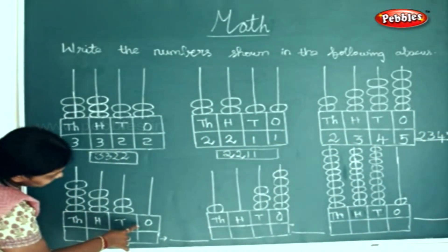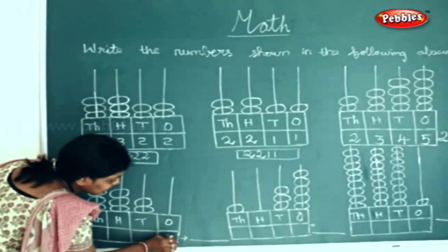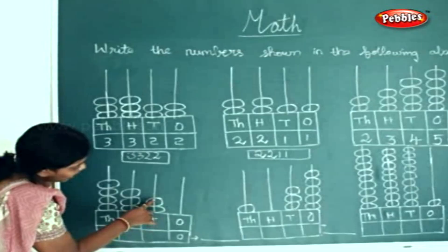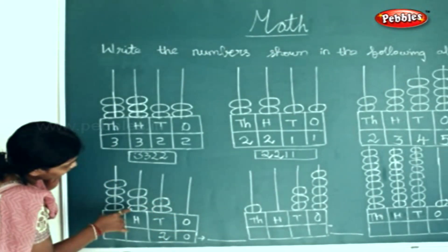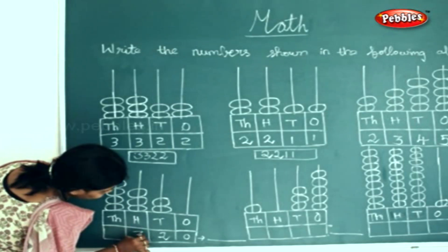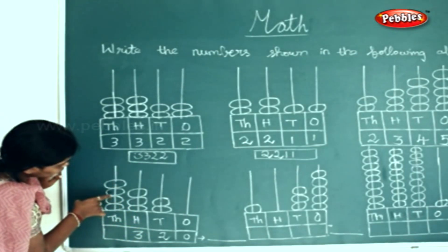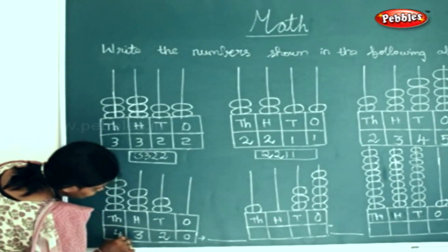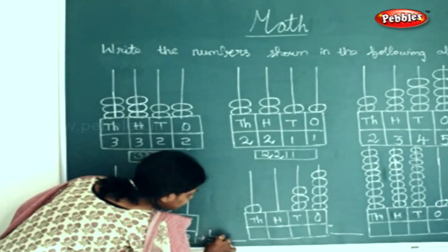How many beads in the ones place? No beads, so we write a zero here. How many beads in the tens place? One, two. How many beads in the hundreds place? One, two, three. How many beads in the thousands place? One, two, three, four. So this is written as four thousand three hundred and twenty.